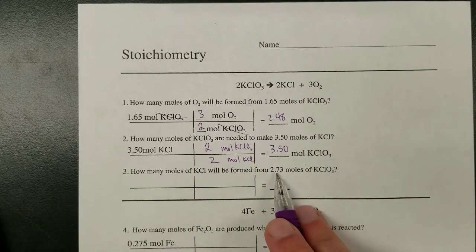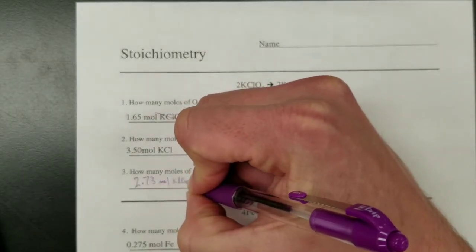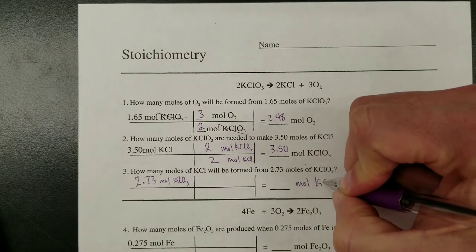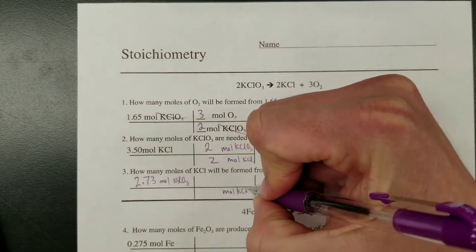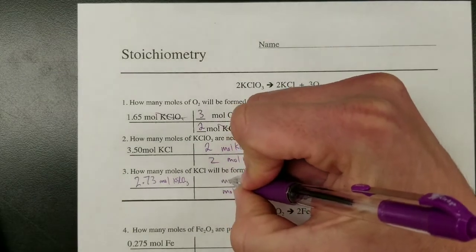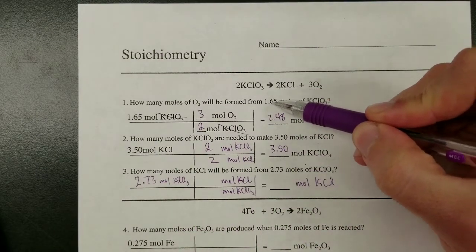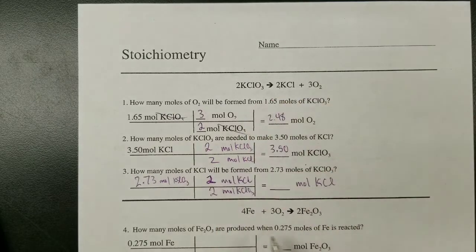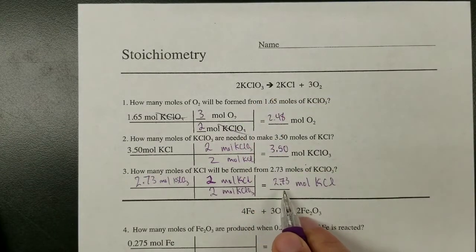For the next problem: how many moles of KCl are formed from 2.73 moles of potassium chlorate? Take the given — 2.73 moles of KClO₃ — and set up the conversion so moles of KCl is in the answer. Make sure moles of KClO₃ cancels in the denominator, and put moles of KCl on top. There's a 2 next to KCl in the balanced equation, so put 2 in the numerator. There's a 2 next to KClO₃, so put 2 in the denominator. Then 2.73 times 2 divided by 2 gives 2.73 moles of potassium chloride produced.